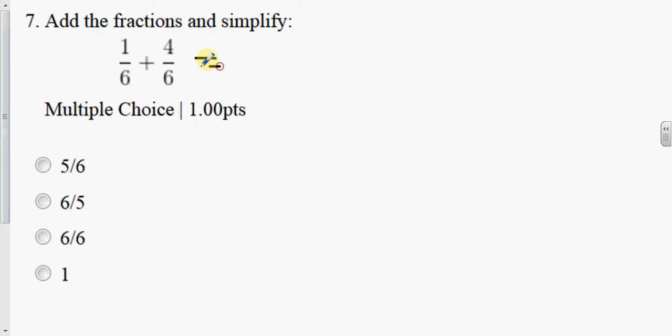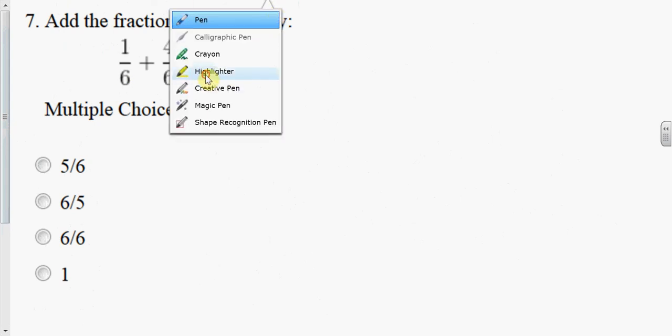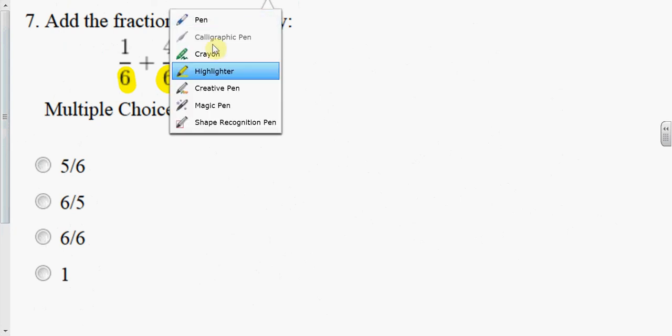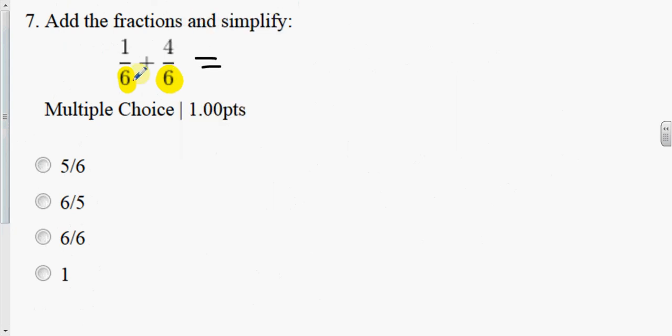Add these two fractions. Well, look. Notice that they have the same denominator. Woohoo! If you have the same denominator, then you can add the fractions or subtract if the sign is subtracted. So here we add 1 plus 4 is 5 all over 6. That's the answer.